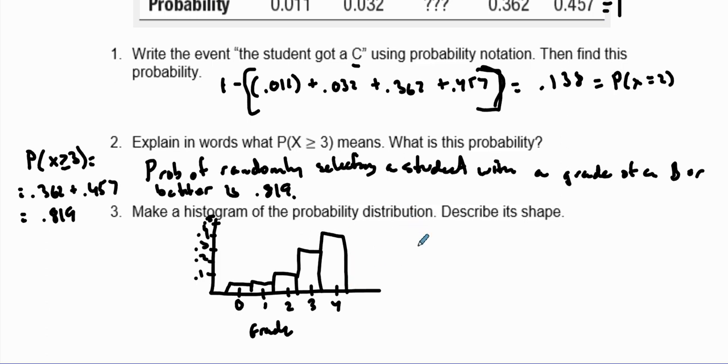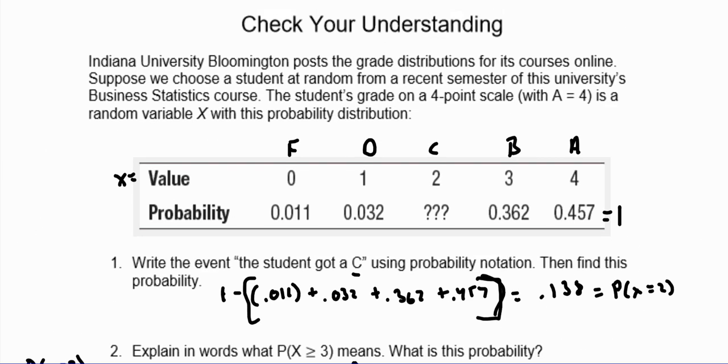So what we have here is the shape of the probability distribution of grades is skewed to the left, because we have a tail to the left. I hope this helps you out and figure out probability distributions. Good luck with the rest of your problems.